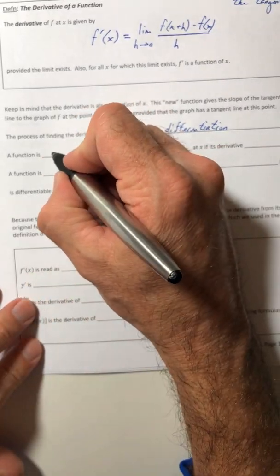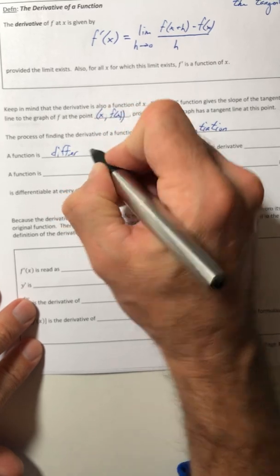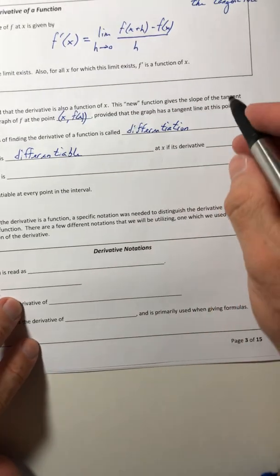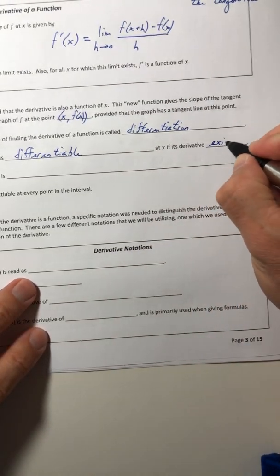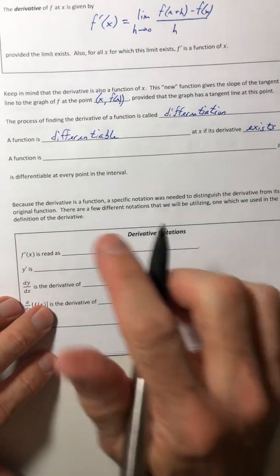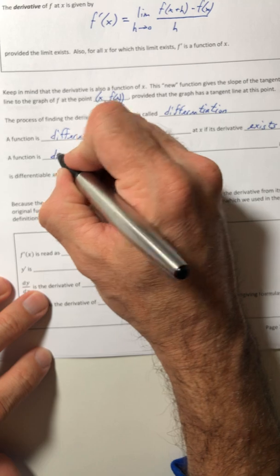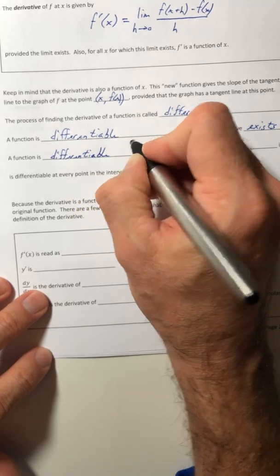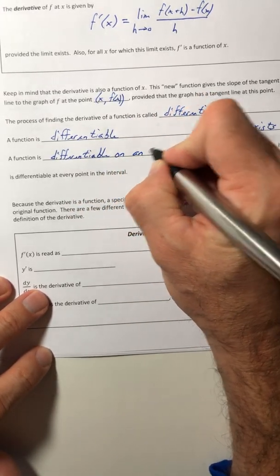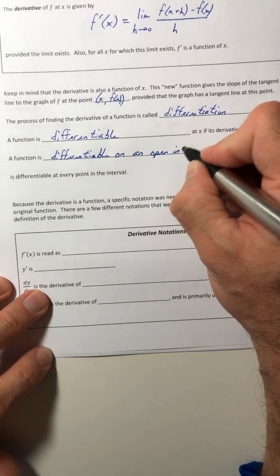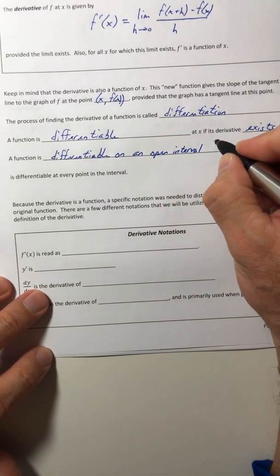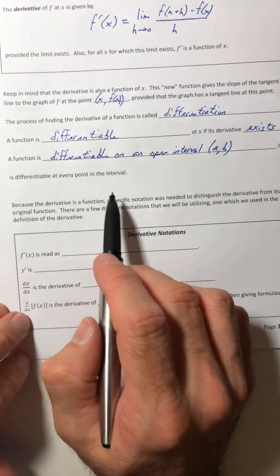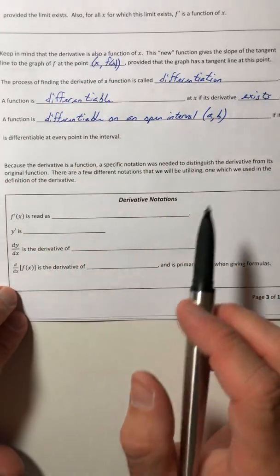A function is differentiable at x if its derivative exists, and a function is differentiable on an open interval from a to b if it is differentiable at every point in that interval. Okay, so those are just some vocabulary words for you.